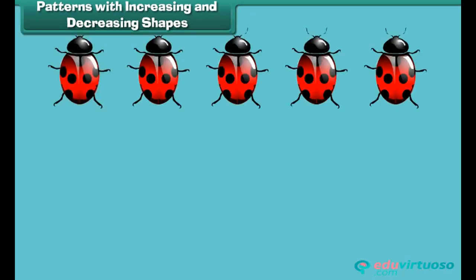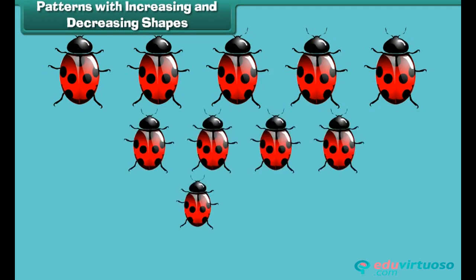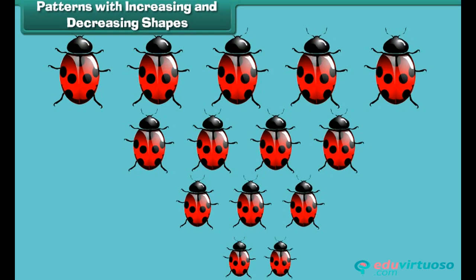Look at one more arrangement of shapes. Five large beetles, followed by four smaller beetles, followed by three even smaller beetles and so on. This is also a pattern because the number and size of the beetles decreases in a definite order.